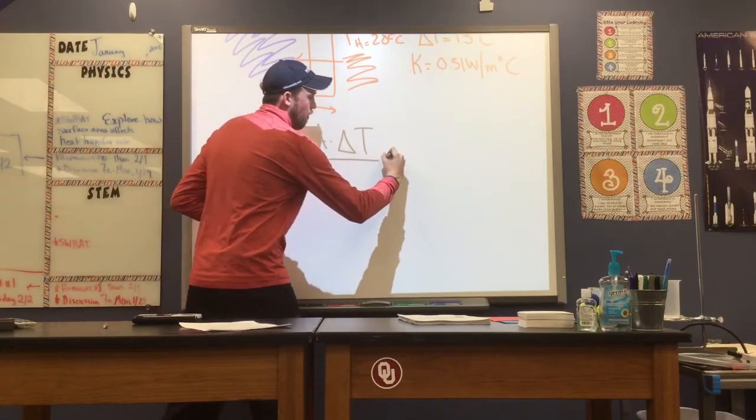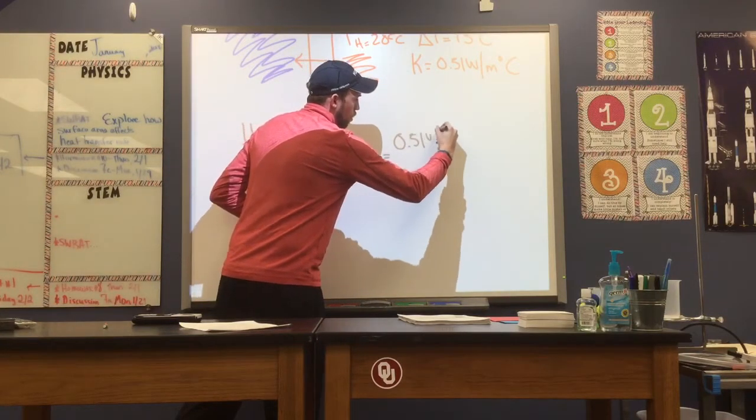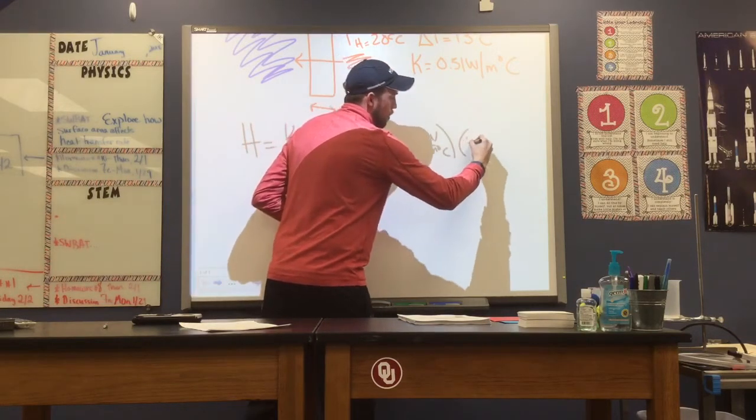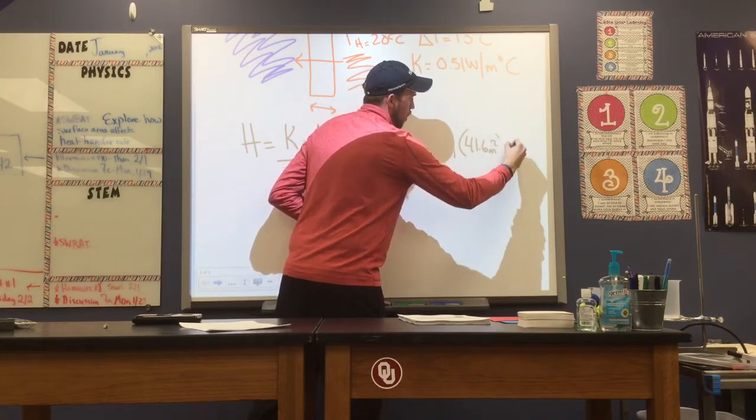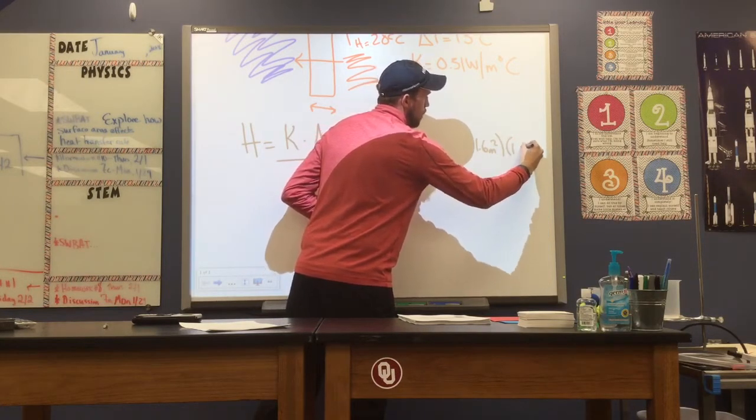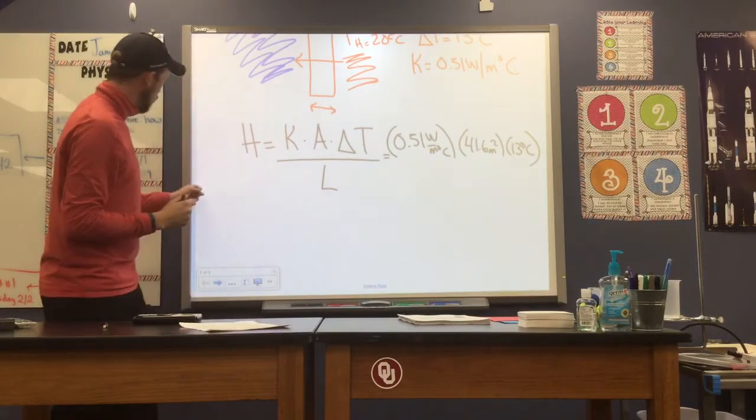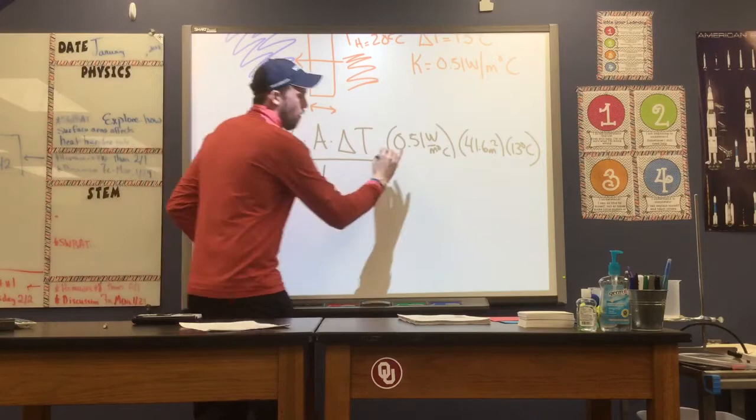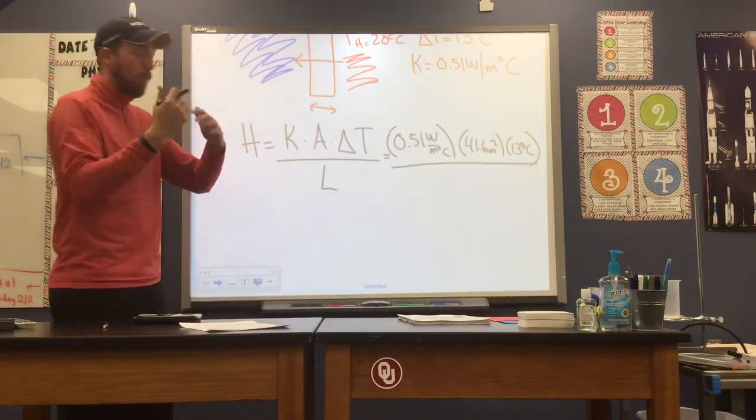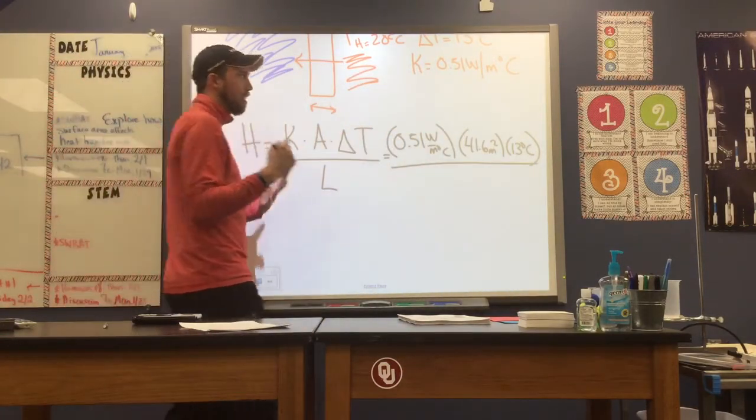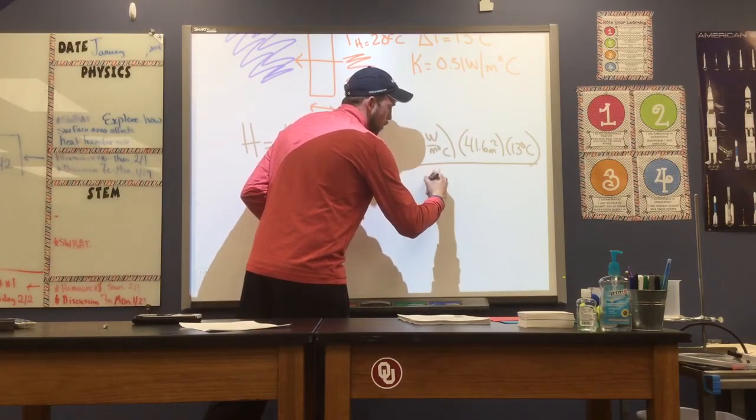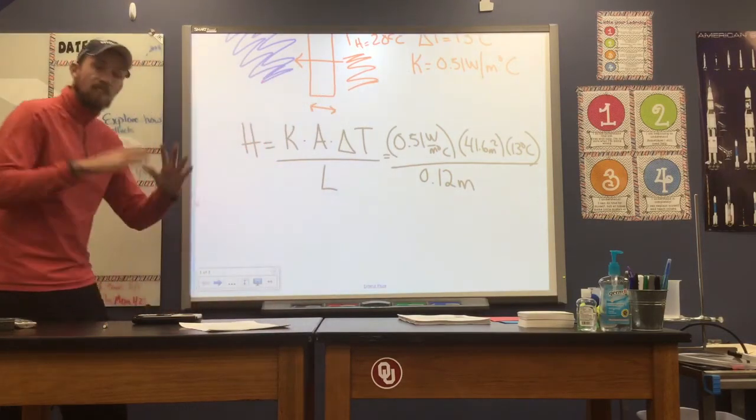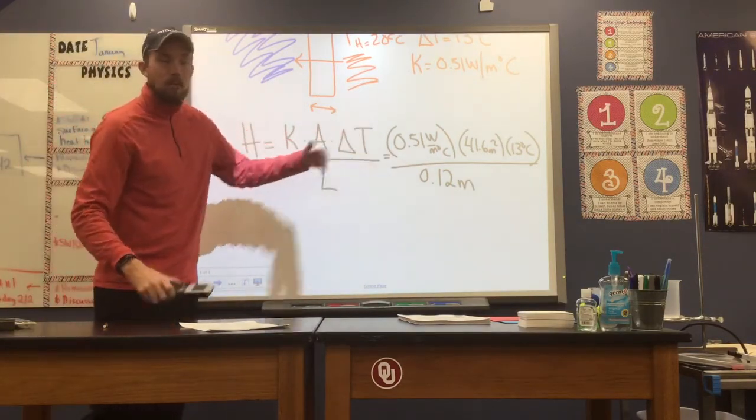So our thermal conductivity, 0.51 watts per meter degree Celsius. Our contact area, we just determined 41.6 meters squared, and our temperature difference was 13 degrees Celsius. Did I say that correctly? Yes, 20 and 7. Okay, so those are our variables in the numerator. And we'll divide by the length that our heat's passing through our thickness, which was 12 centimeters or 0.12 meters. So we've identified all of our variables. Let's go ahead and plug these values in and see what we come up with.